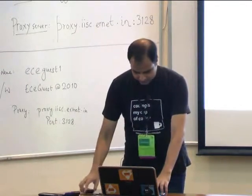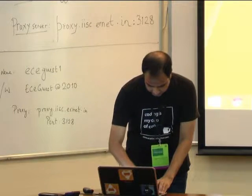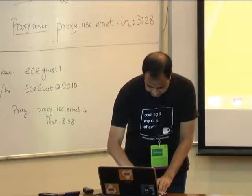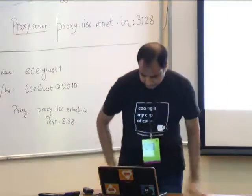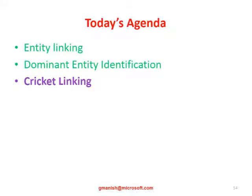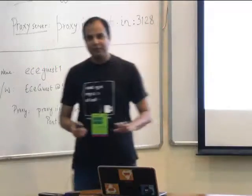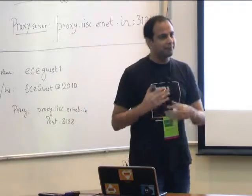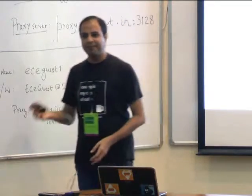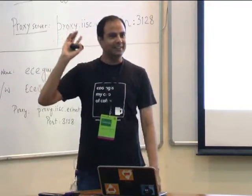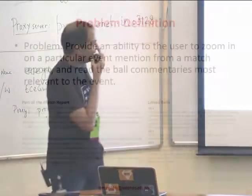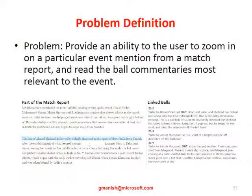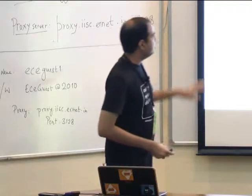I will talk about Cricket Linking because it relates to entity linking very nicely. The problem is: I want to do a similar kind of entity linking, but this time it's a little more complicated. Here is a cricket article — but rather than linking phrases like 'Mohit Sharma' or 'R Ashwin' to Wikipedia entities, my linkage has to be done at the level of phrases or sentences describing events. For example, 'the loss of Ahmed Shahzad followed by Soheb Maksud in the space of three balls from Umesh' — this event phrase has to be linked to appropriate commentary balls.